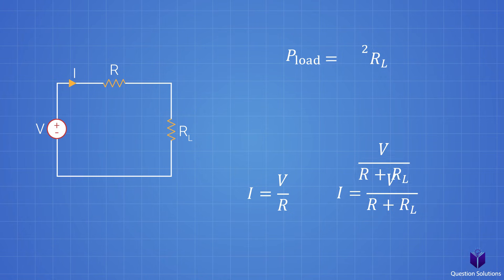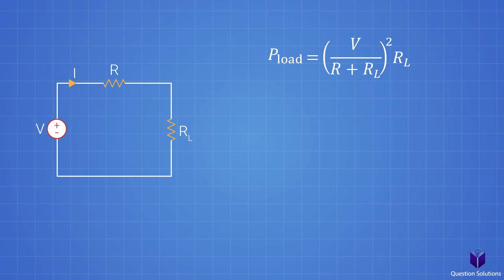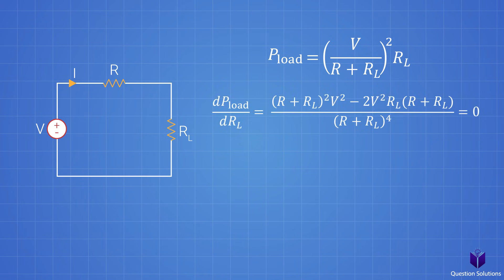Let's plug this value back into our power equation. The question is: what value of RL will give us the biggest power value? Using calculus, we can figure that out. All we need to do is differentiate this equation with respect to RL and then set it equal to zero. Without getting into the nitty-gritty details, what you will end up getting is that if RL is equal to R — if the value of the load resistor is the same as the source resistor — then you get the maximum power transfer.